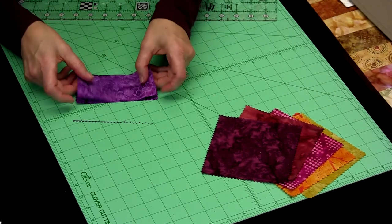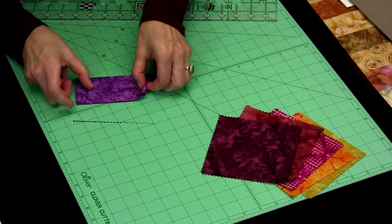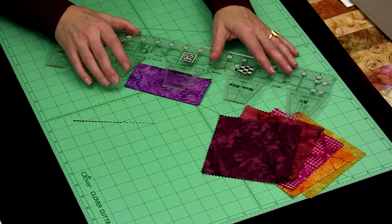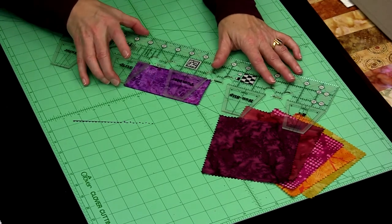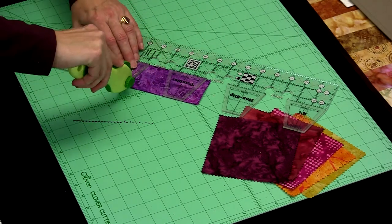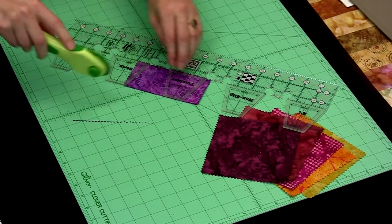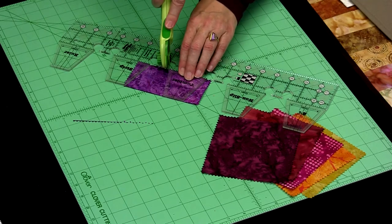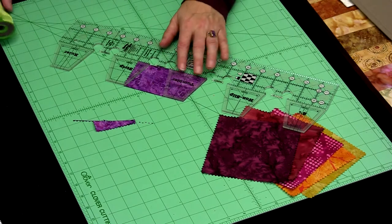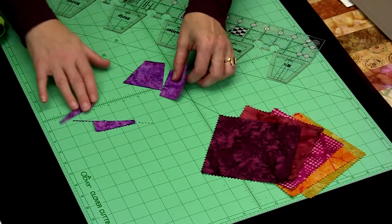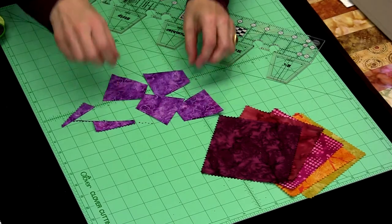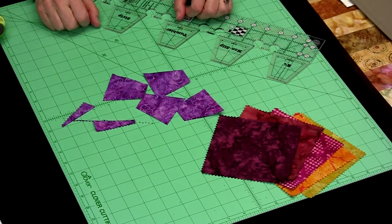Now we can stack these 2½ inch strips. So I'll come up, turn the ruler around, and I'll be able to cut that 5 inch charm square into four little tumblers. And back, and over again. Again, with very little waste, I've cut my pieces ready for my project.